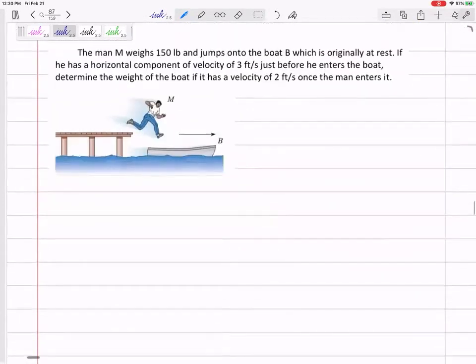All right, let's look at the next one. So this man weighs 150 pounds, jumps onto the boat B, which is originally at rest. If he has a horizontal component of velocity at three feet per second just before he enters the boat, determine the weight of the boat if they both are moving now at two feet per second once he enters it.